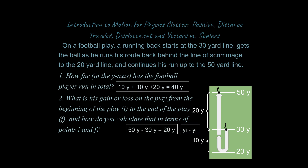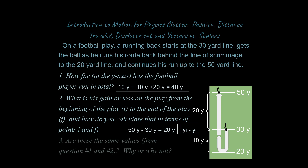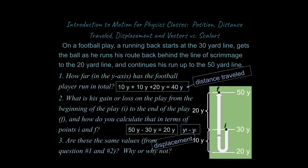The answer is going to be 20 yards. His final position is at the 50-yard line, so the difference between the final and initial position is 50 minus 30, giving a 20-yard difference. I'm not worried about the path back here — I'm just considering the difference between my initial and final position, calculated as final position minus initial position. 40 yards is clearly not the same as 20 yards, so distance traveled and displacement are not the same thing.